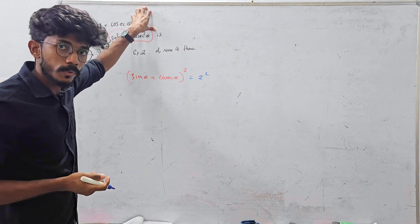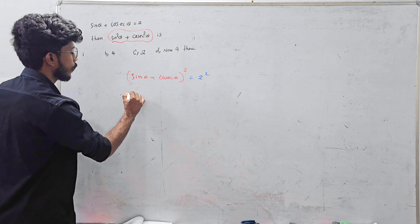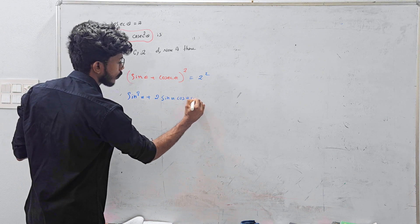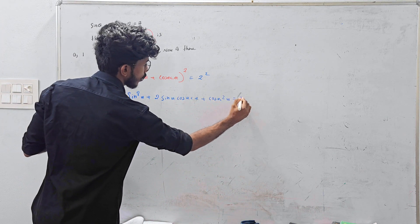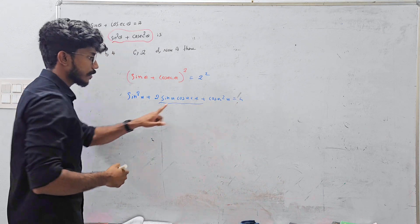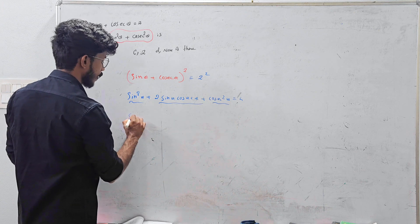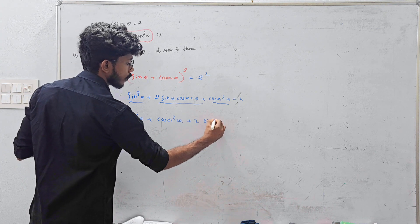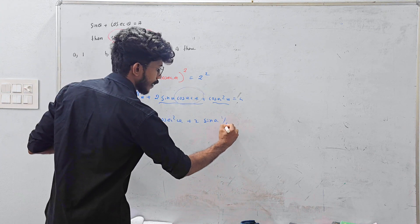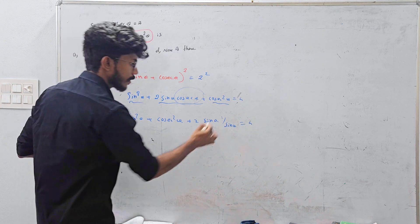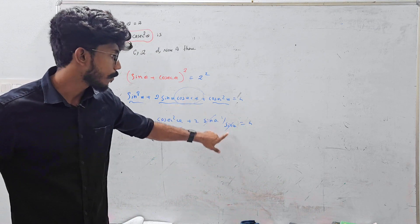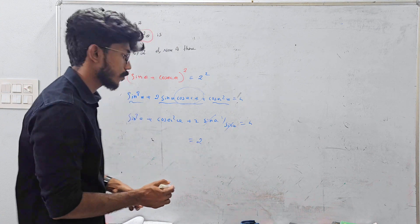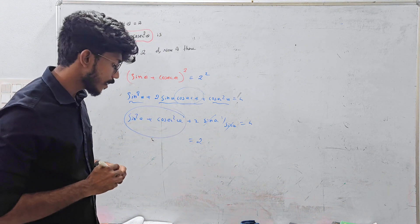Sin theta plus cos theta equal to 2. On the other hand, I will expand: sin squared theta plus 2 sin theta cos theta plus cos squared theta equals 4. Sin theta plus cos theta equal to 1 divided by sin theta — expanding both sides, sin theta cancels, giving e² equal to 2.